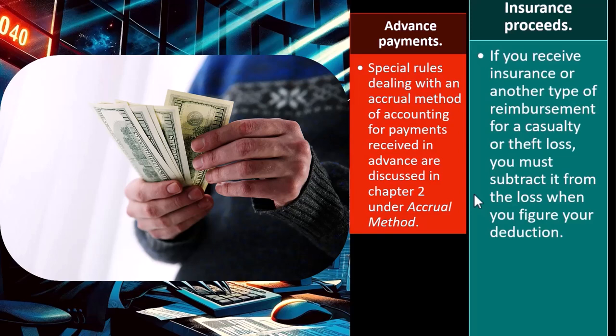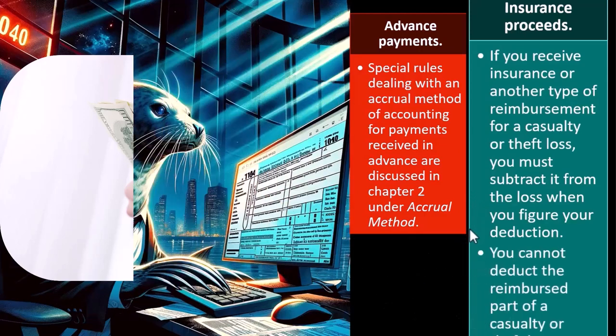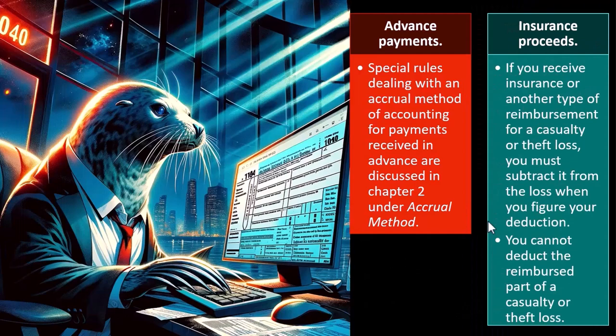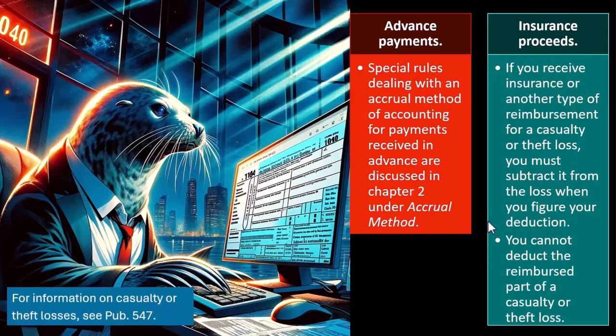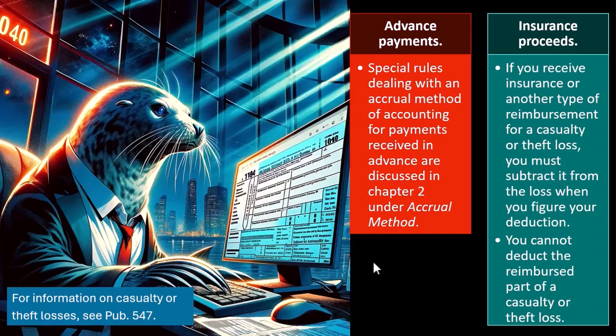If you received more insurance than the value of the thing that burned down, then you might have some kind of gain situation. You cannot deduct the reimbursed part of the casualty or theft loss. For information on casualty and theft losses, see Publication 547. If you get a reimbursement from insurance, you can't deduct the part that you got reimbursed for, because you got reimbursed for that part.